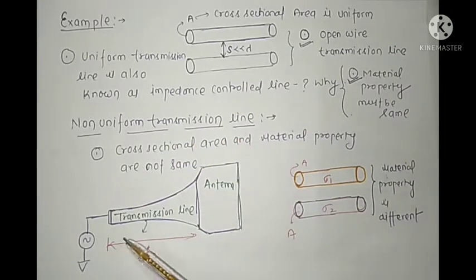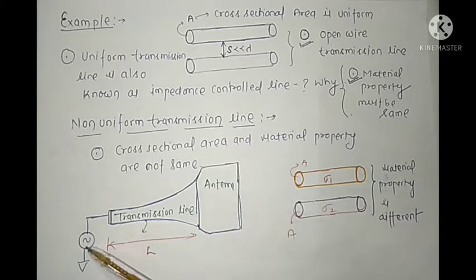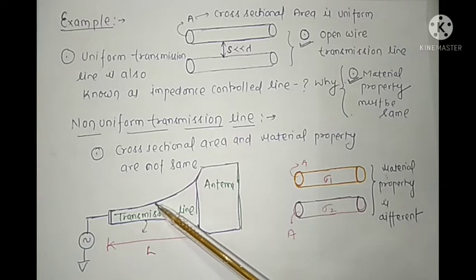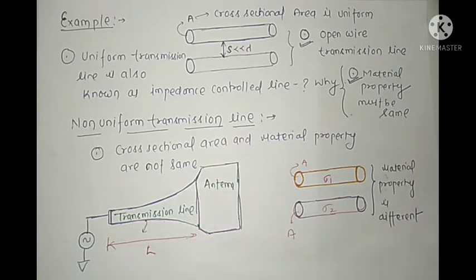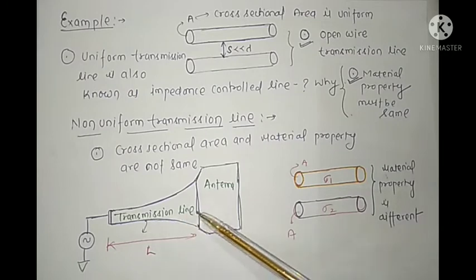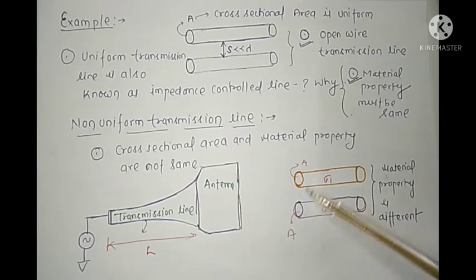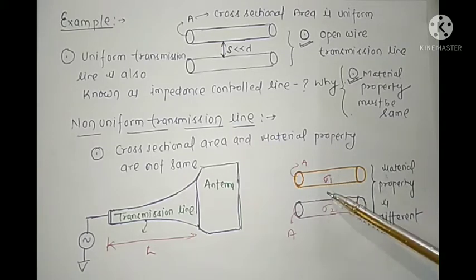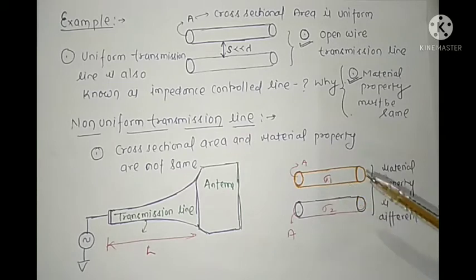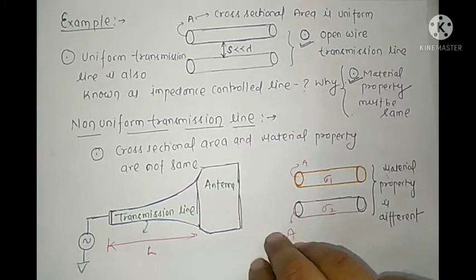Here is a picture of a transmission line where an antenna behaves as a load and the line is excited by a source. In this case, the cross-sectional area is increasing along the length, so we cannot call it a uniform transmission line. As a task: if the cross-sectional area of both conductors is the same but the material property is different, you have to decide — is it uniform or non-uniform?